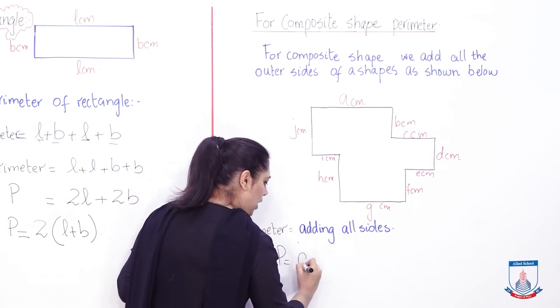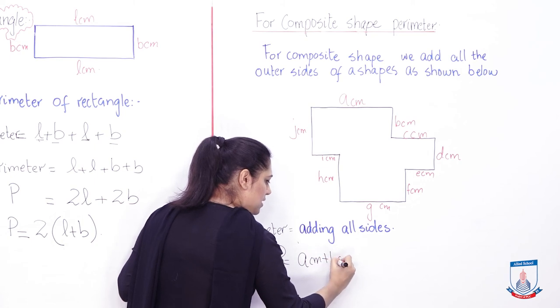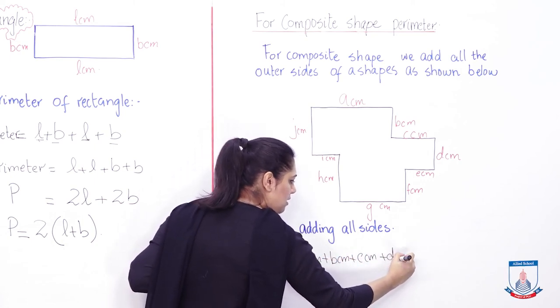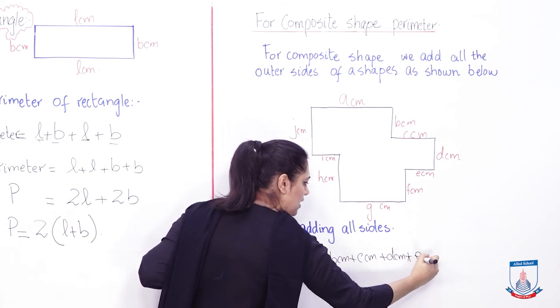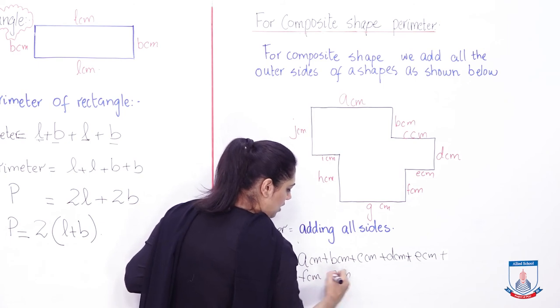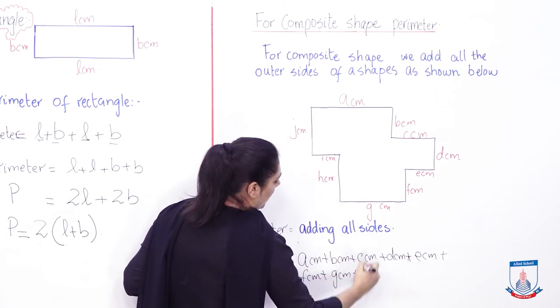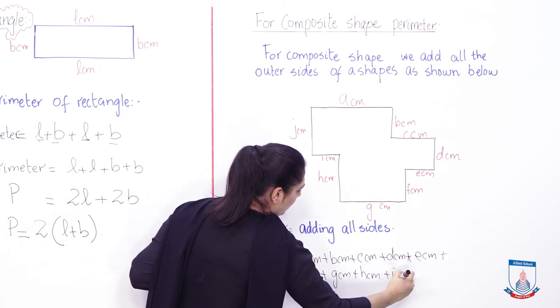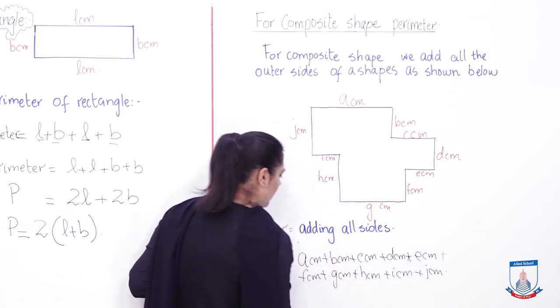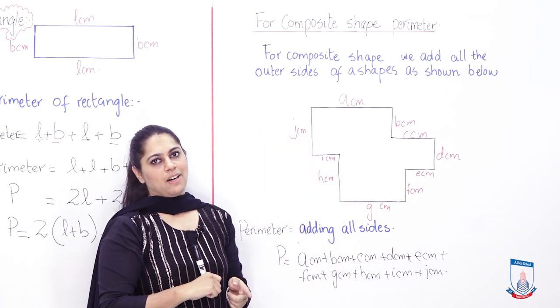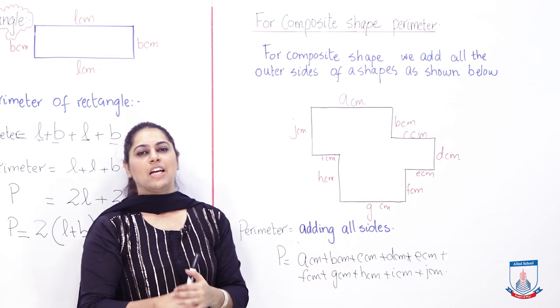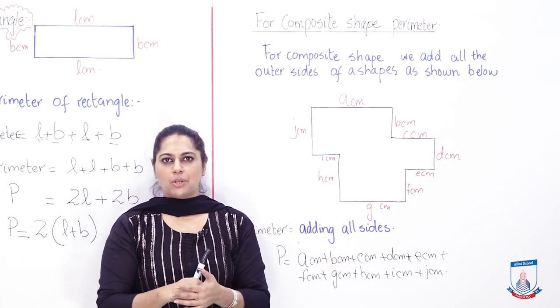Since I have to find out perimeter, what is perimeter's definition? Just to add the outer sides. Let's add all of these. Perimeter adding all the sides: P equals to a centimeter plus b centimeter, c centimeter, d centimeter, plus e centimeter, f centimeter, g centimeter, h, i, and j. This shape can have a very large perimeter if we have its measurement.